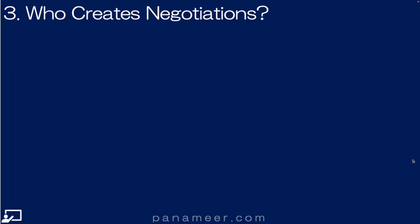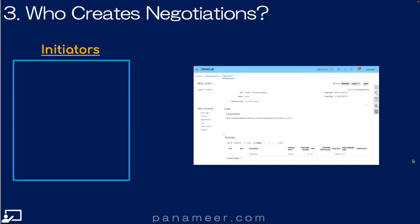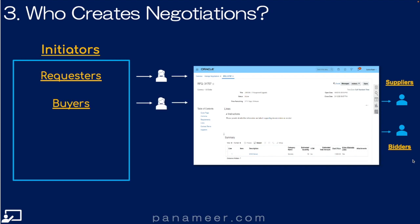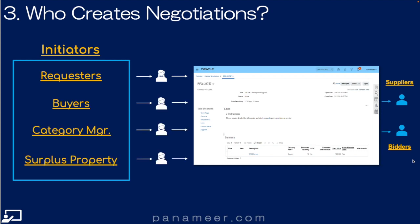Slide three: who creates negotiations? The initiators of negotiation or sourcing events are as follows: requesters, buyers, category managers, or in the case of a sell auction, surplus property managers.